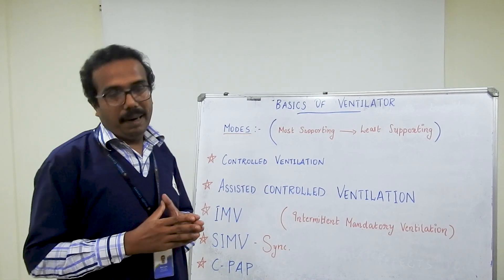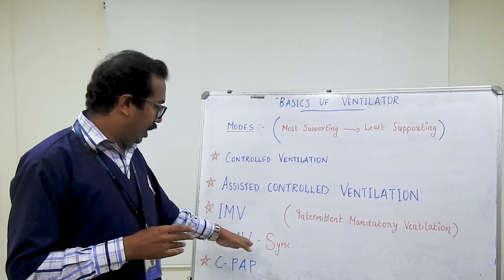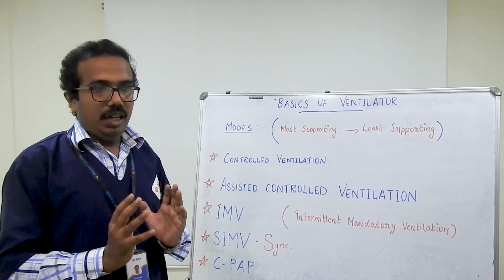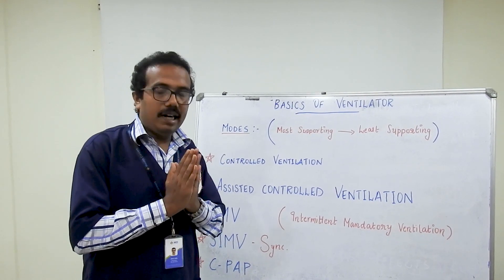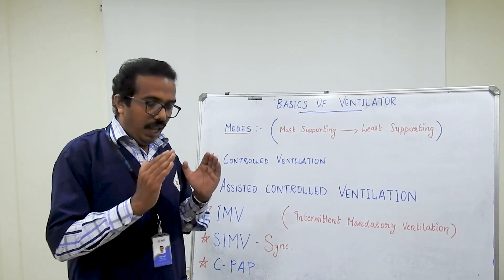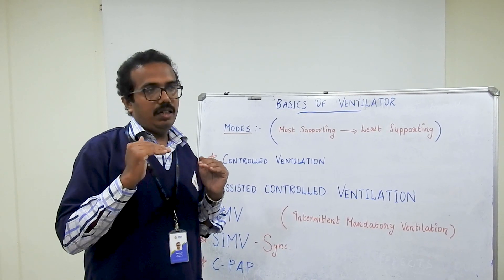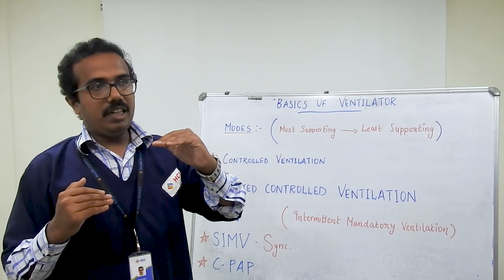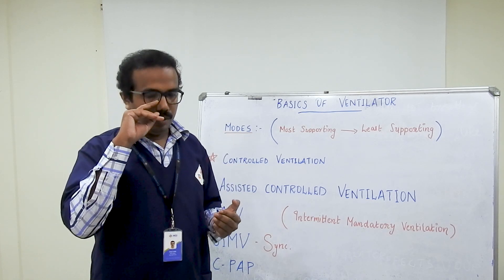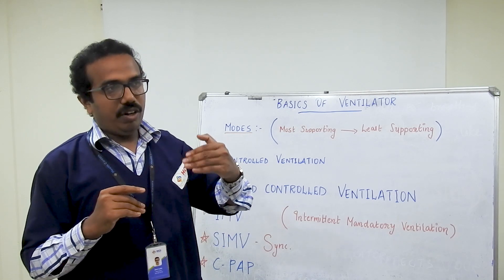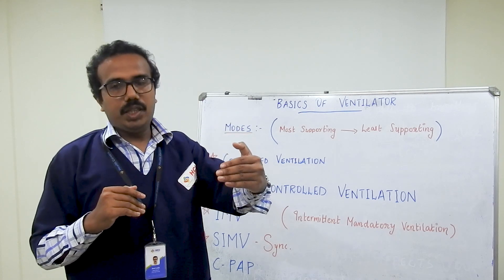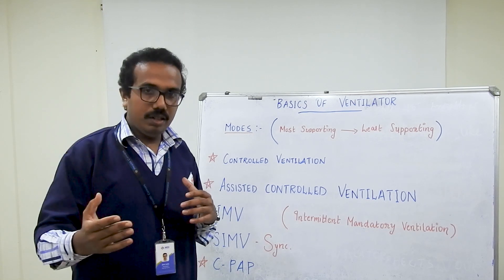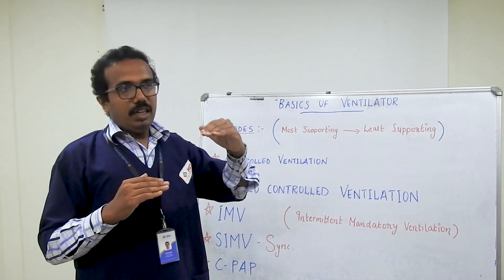Next is synchronized intermittent mandatory ventilation. Here the tidal volume and respiratory rate are preset, and the ventilator synchronizes its breaths with the patient's own breathing efforts. If the patient is taking more breaths and the ventilator respiratory rate is low, the ventilator rate will adjust accordingly.